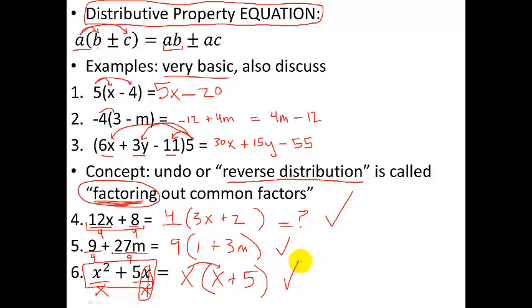Distribution is multiplying some number or term outside of parentheses by everything inside, and that's all there is to it. And then we have this idea of factoring, where you undo distribution by working backwards. All right, see you in class.